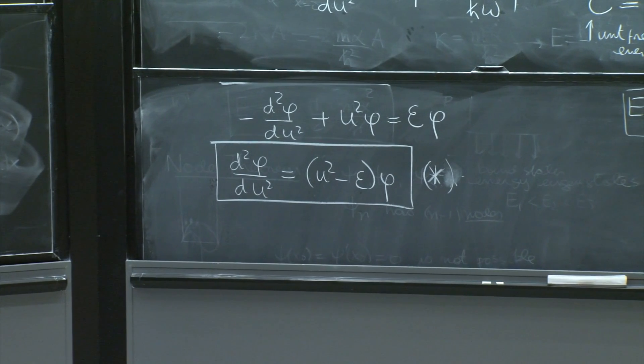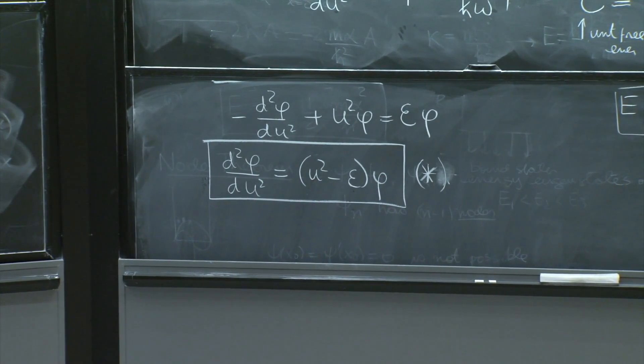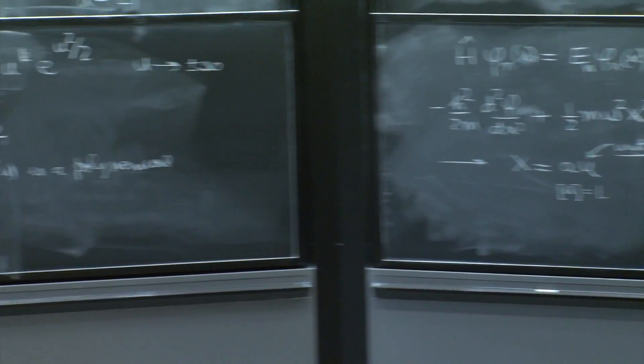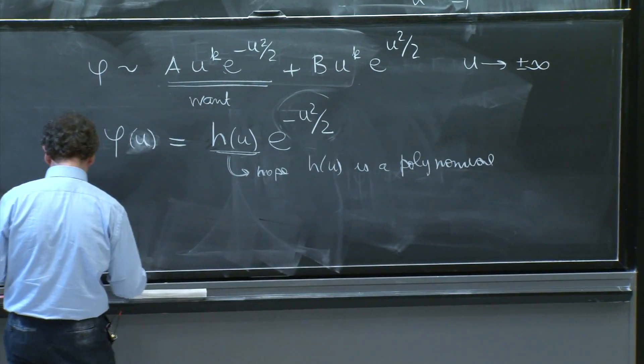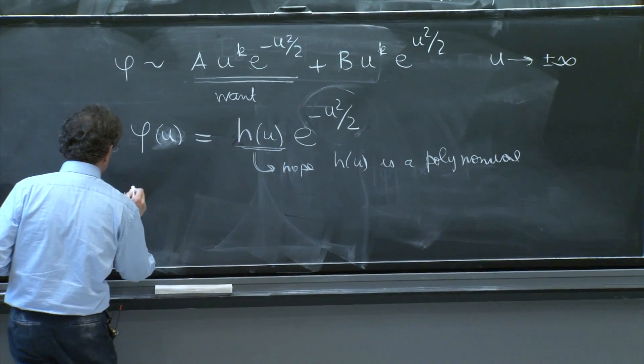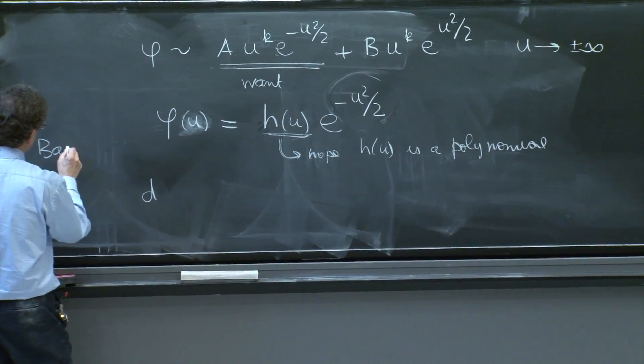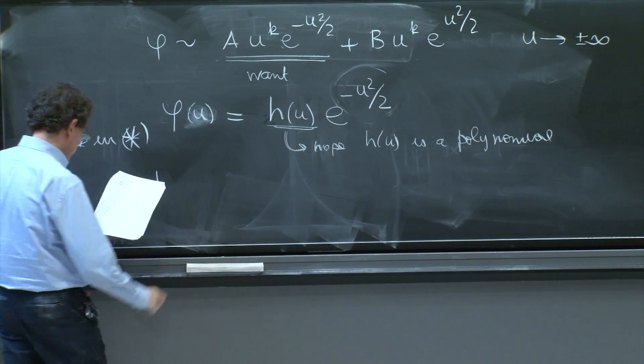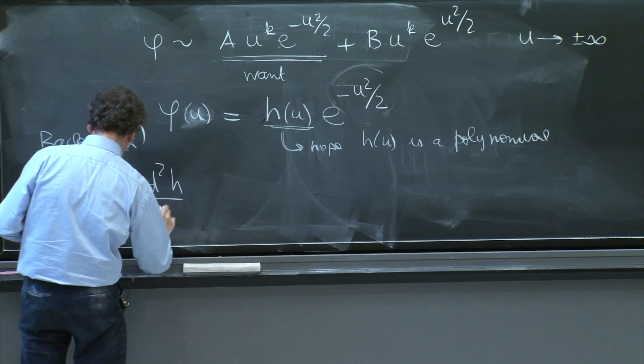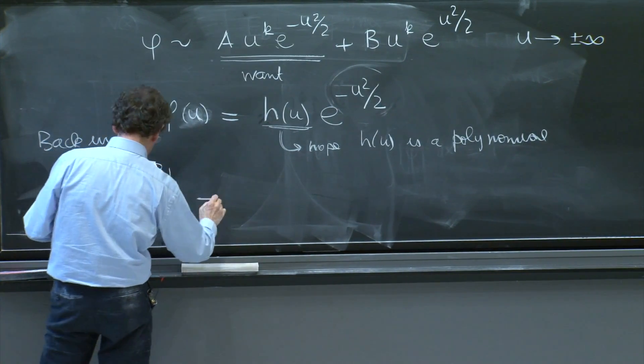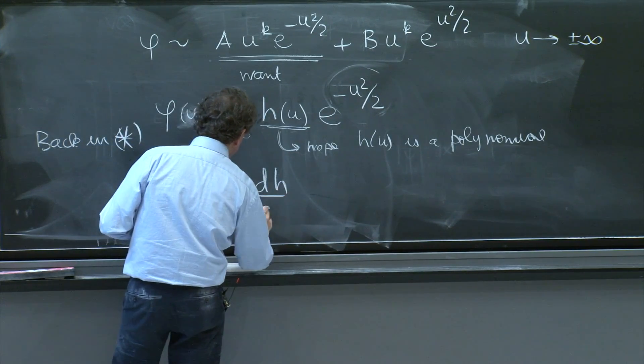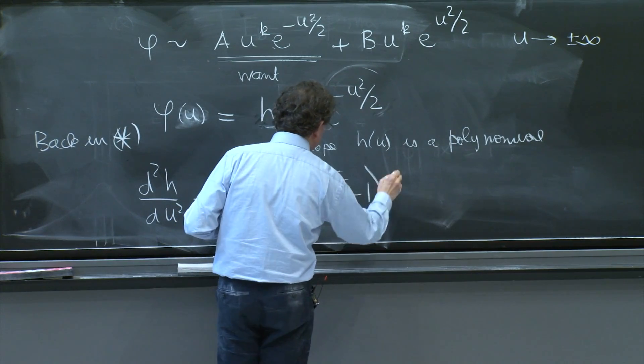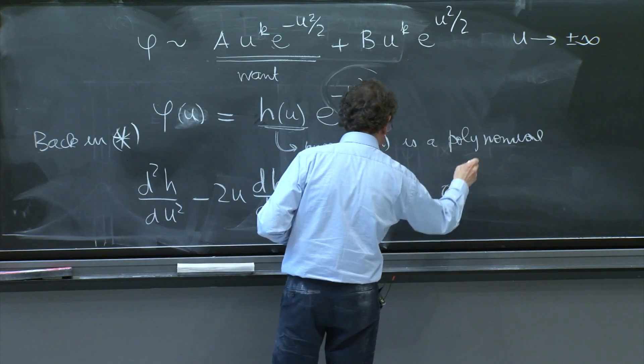This is no assumption. The differential equation for φ implies a differential equation for h. You just substitute this and look at it. That's a one-line computation or a two-line computation. I'll give the answer.